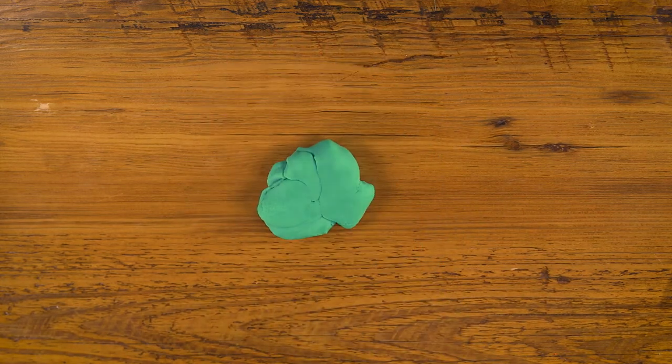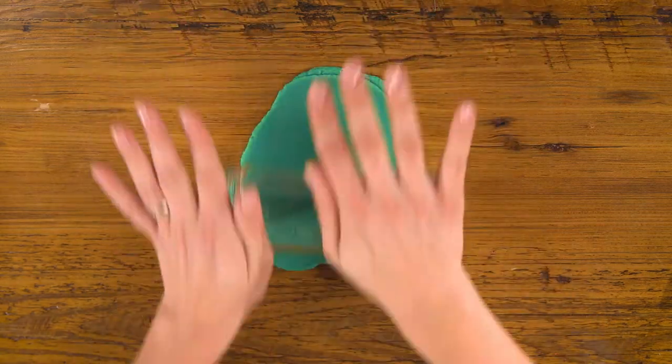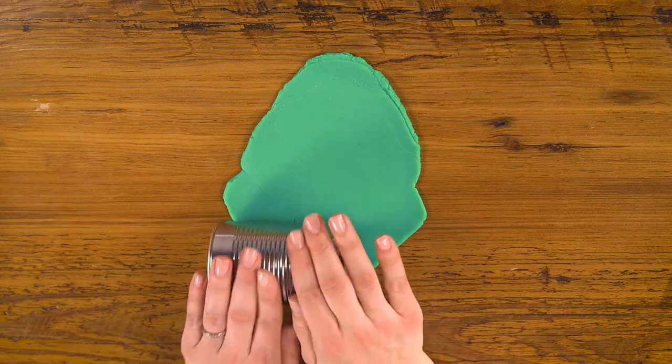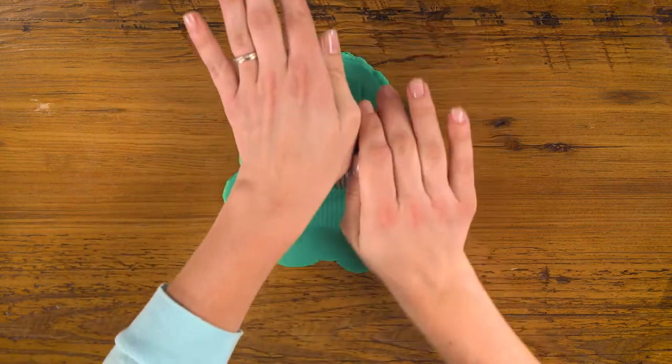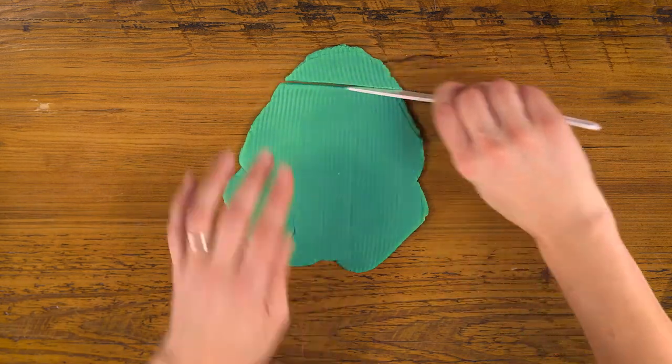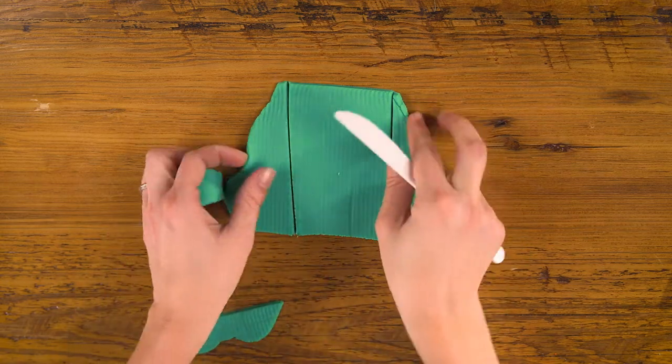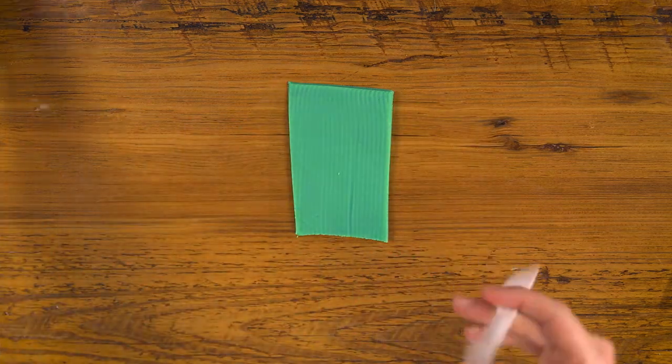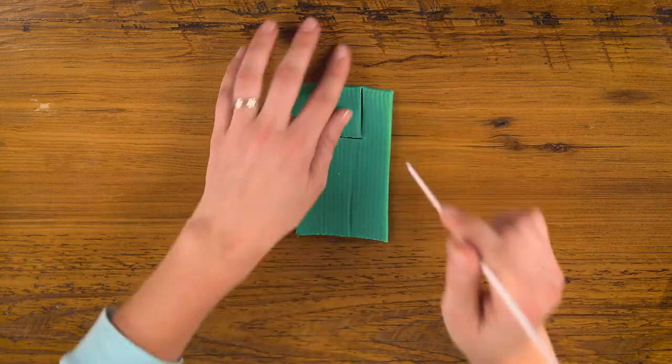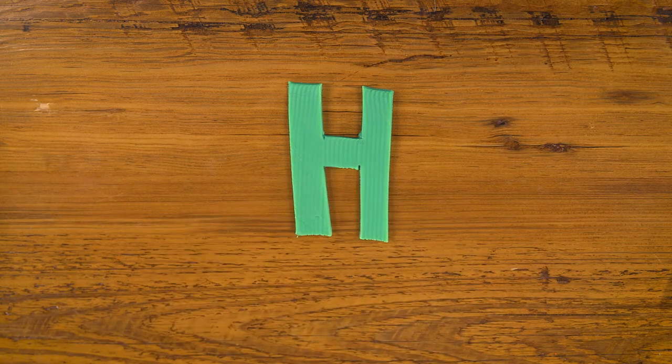For H, let's use our green to roll out a nice big pancake. And this time I want to add some texture, so I'm going to use one of my cans to roll ridges along it. Then using my knife, I'm going to cut a rectangle. Then I'll cut out the top and the bottom, and there's our H.